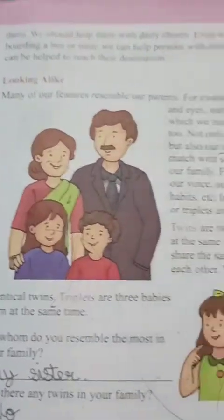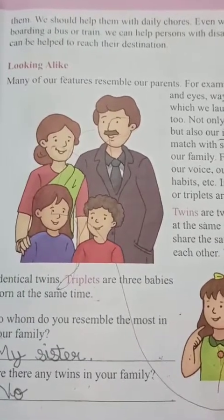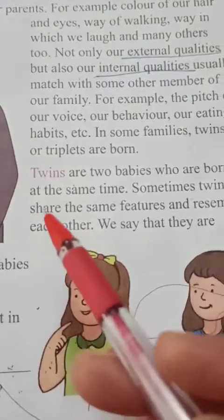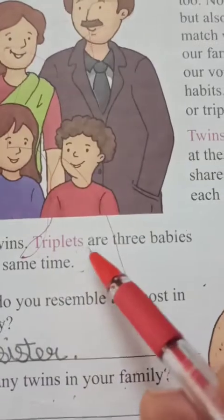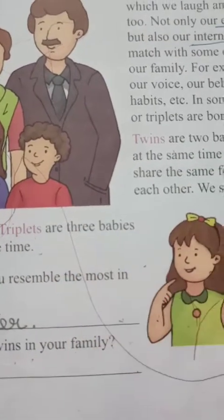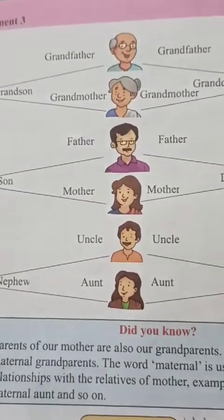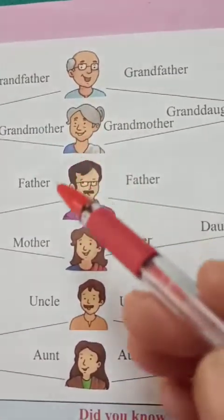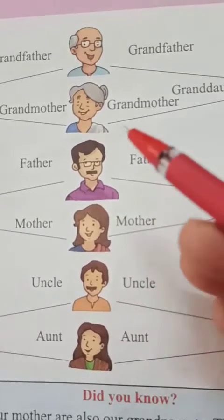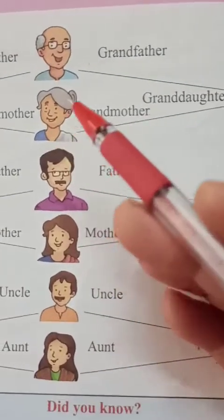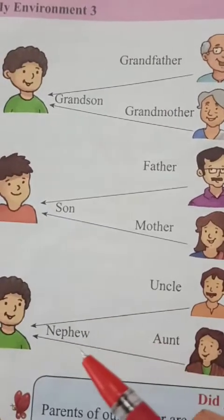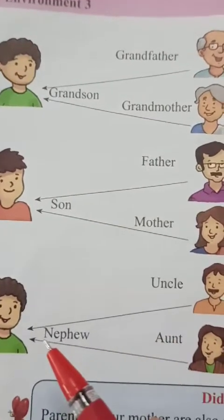Here we have also studied about the different characteristics or features which are matching with our parents. We also studied about twins and triplets. After that I taught you about different relations — our relatives, the different members of our household, what relation they are to us and what relation we are to them.